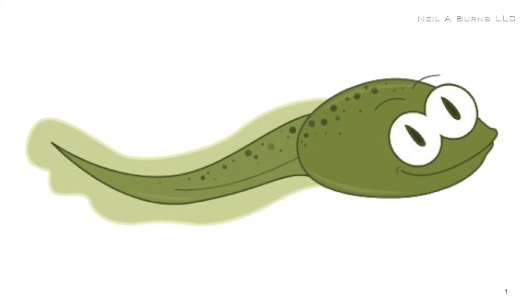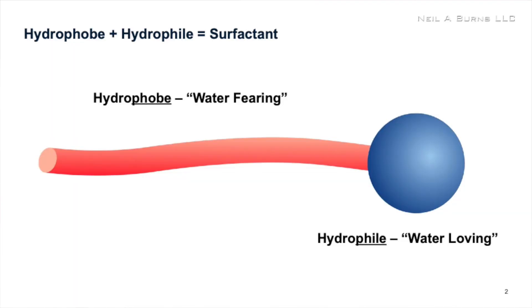The first thing I tell my clients, especially the board-level folks, when the subject of surfactant comes up: you need to be thinking about a tadpole — a baby frog, a tadpole. Why is that? A tadpole has a head and a tail, just like the surfactant molecule — a hydrophilic head and a hydrophobic tail. And that's what makes a surfactant a surfactant.